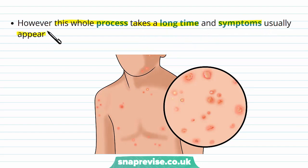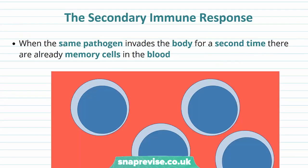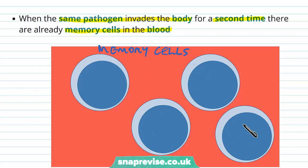Symptoms usually appear because the pathogen starts doing damage, which is often visible as various different symptoms, because it's had time while the immune system is setting up its response. Now, if we've cleared the pathogen but then later the same pathogen invades the body for a second time, there already are memory cells floating around in the blood. These memory cells come from differentiated B cells and they keep a record of the previous pathogen and the antigen information that it has.